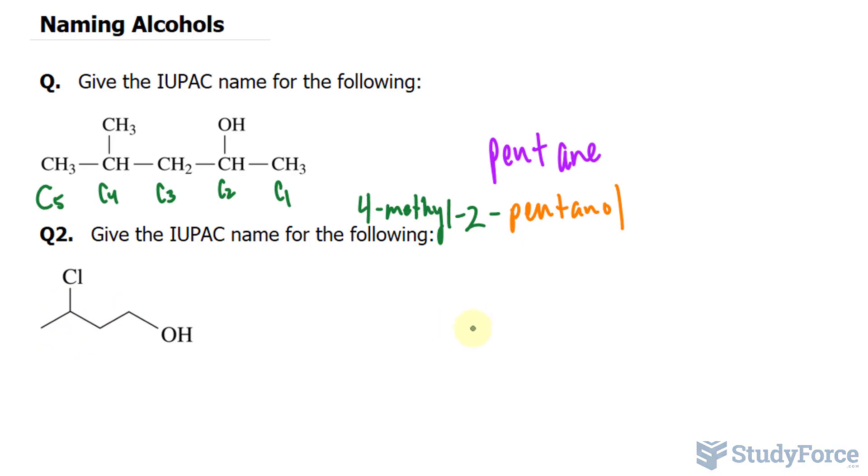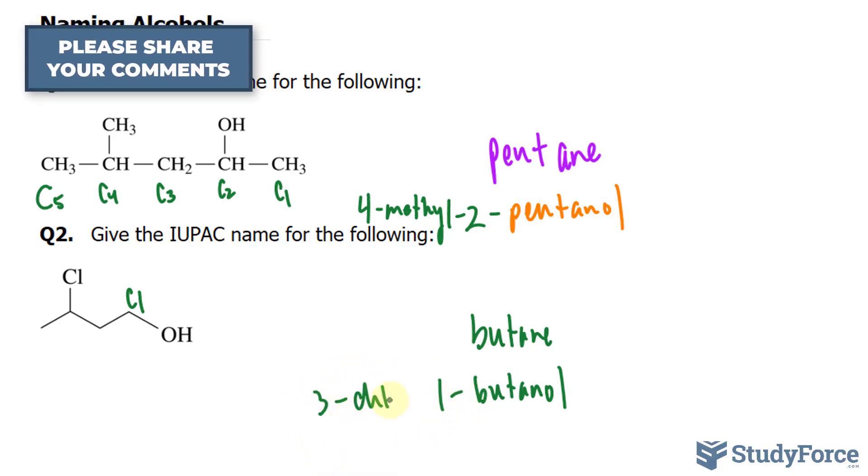There are four carbons here. We'll write down butane. But there is an OH at C1. So it's butanol, one-butanol, three-chloro. So three-chloro-one-butanol is the name for this structure.